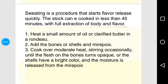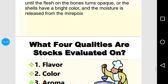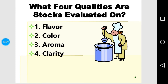To sweat bones: heat a small amount of oil or clarified butter (desi ghee) in a pot, add the bones, shells, and mirepoix — shells are used especially when making shellfish soups like bisque. Cook over moderate heat, stirring constantly, until the flesh on the bones turns opaque or the shells have a bright color and moisture is released from the mirepoix. A good stock is evaluated based on its flavor, color, aroma, and clarity.